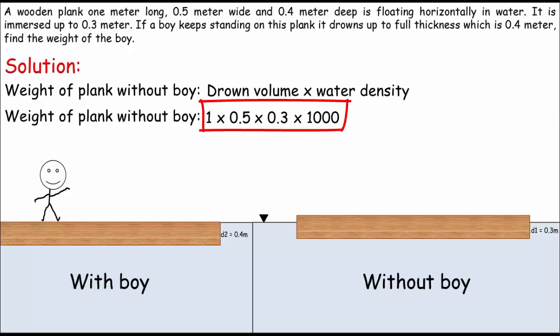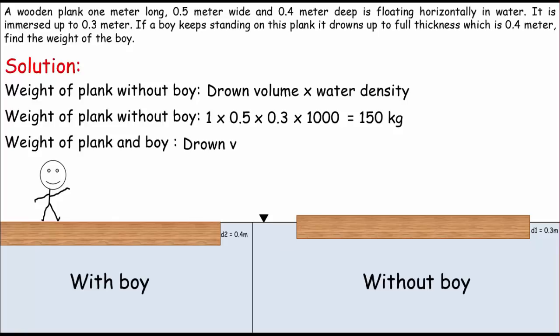And times the density of water, which is going to be 1000 kilograms per cubic meter. Just multiply these four, we get the weight of plank which is 150 kilograms.